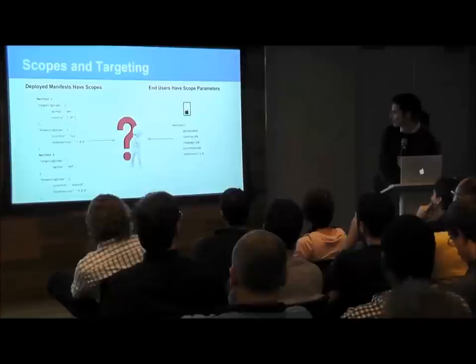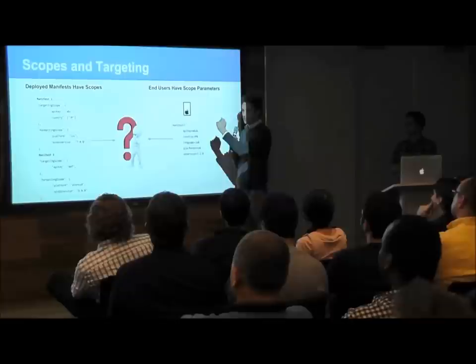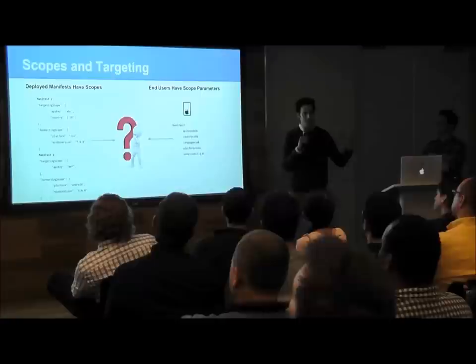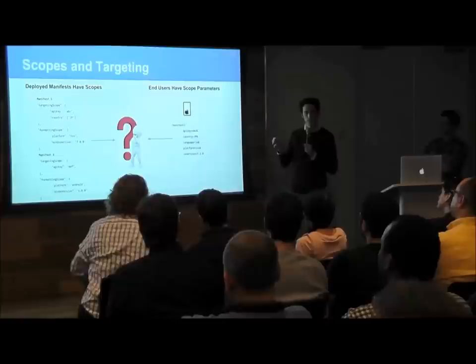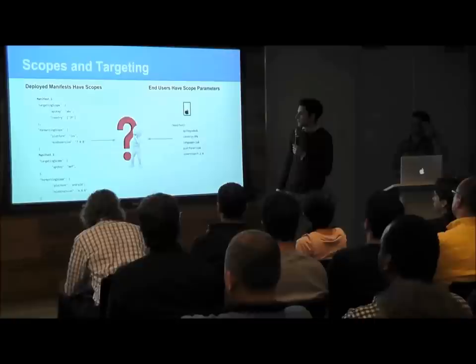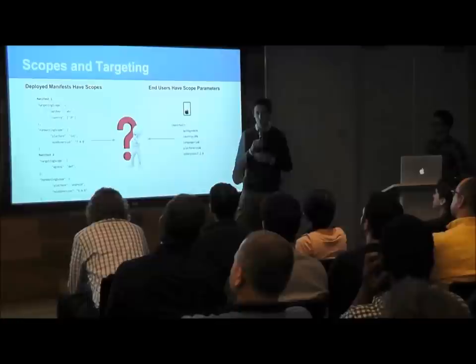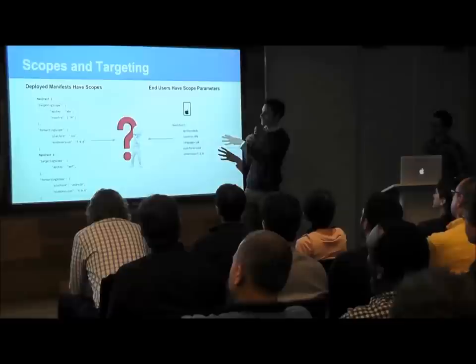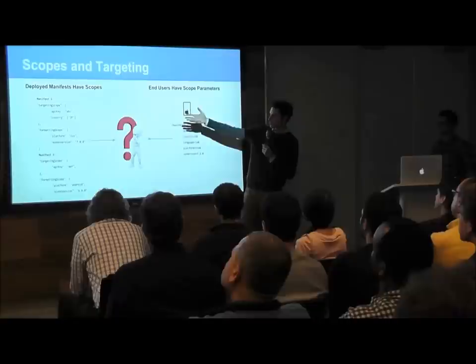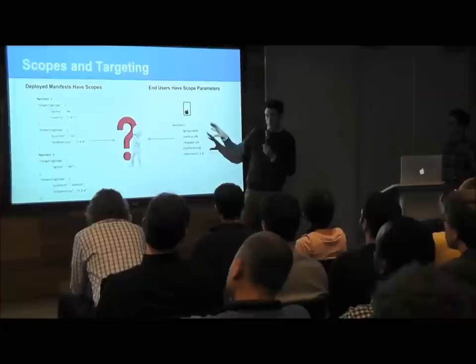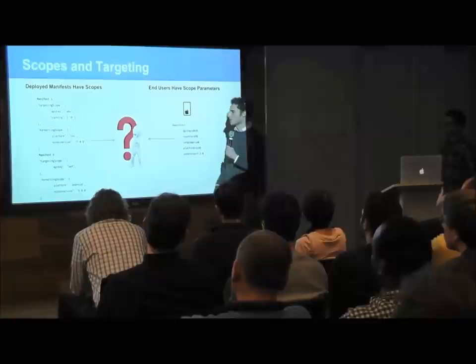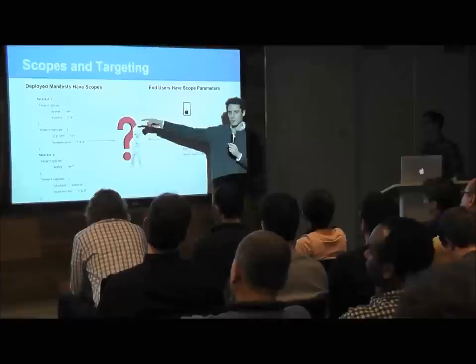To bring us back to the second Fat Tiny situation: how do we target this to only Japanese users using PicStitch on iOS? Every manifest has a scope — a combination of all those different scope parameters — and any possible parameter we want to target on can be included. In Mongo, every deployed manifest has a scope associated with it. For example, manifest one targets users using API key ABC — corresponding to PicStitch — and only those users in Japan. Notice that the country field is an array, so it could be Japan, or China, or Ireland — any combination.